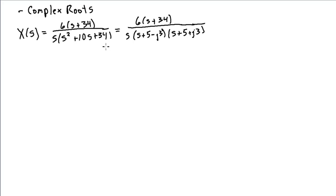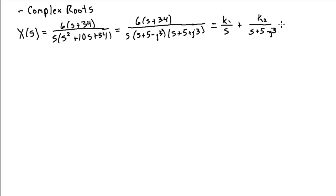With Laplace Transforms where all coefficients of polynomials are real, if we get a complex root we'll also get another root at its complex conjugate location. I could use partial fraction expansion directly and write this as a sum of partial fractions over each denominator term. In this case, it's a requirement that to get a real result, the numerator terms of the complex conjugate pair will also be complex conjugates.